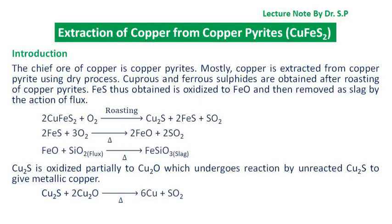In this tutorial we will discuss extraction of copper from copper pyrite CuFeS2. The chief ore of copper is copper pyrite. Copper is mostly extracted from copper pyrite using a dry process. Cuprous and ferrous sulfides are obtained after roasting of copper pyrite. Iron sulfide thus obtained is oxidized to iron oxide and then removed as slag by the action of flux. Cuprous sulfide is oxidized partially to cuprous oxide, which undergoes reaction with unreacted cuprous sulfide to give metallic copper.